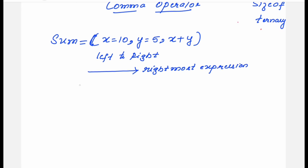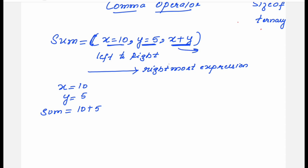This statement assigns the value 10 to x, 5 to y, and finally 10 plus 5 equals 15 to the variable sum. So what you observe is: expressions are evaluated from left to right. There are three expressions here, and whatever is the rightmost expression — that expression is evaluated and its value is assigned to the variable.